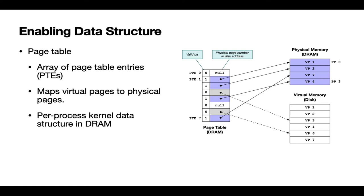In this illustration, I've simplified the representations of physical and virtual memory — physical memory shown as just four pages. The job of the page table is to keep track in the kernel of which pages in the virtual address space are mapped to what locations in physical memory. The structure has multiple page table entries — I'm showing eight entries in our simple page table. Each entry has two pieces: a valid bit (similar to a valid bit in a cache line, indicating whether the entry is valid), and a reference to either physical memory, virtual memory on disk, or an empty entry.